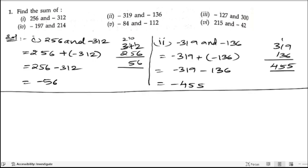Now let us do the third bit. In third bit we are having minus 127 and 300. Let us start, minus 127 plus 300.